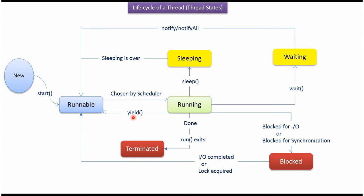When the yield method is called on a running thread, the thread will go from running state back to runnable state.